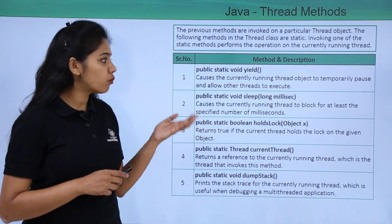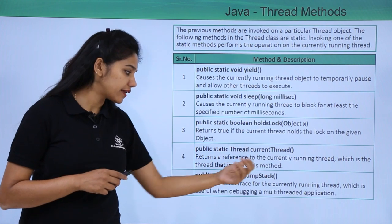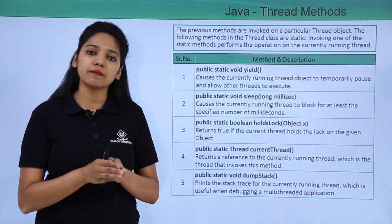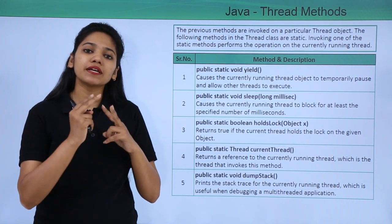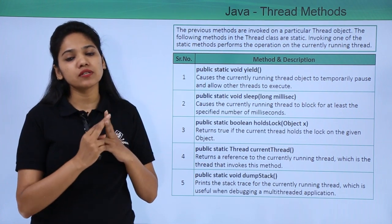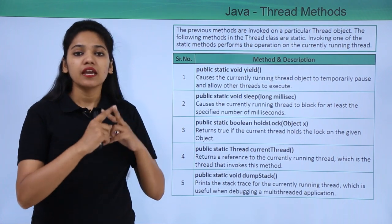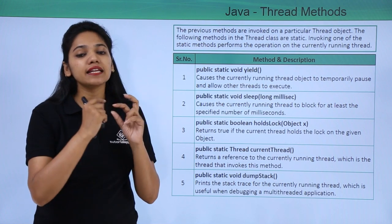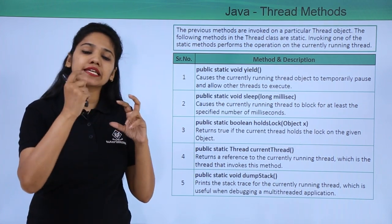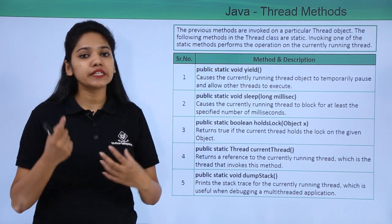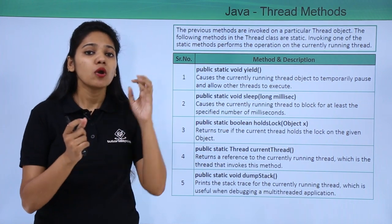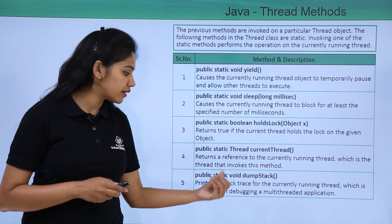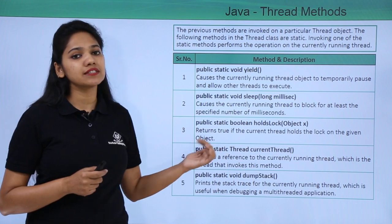There are certain static thread methods as well: yield, sleep, hold, currentThread, and dumpStack. The sleep method specifies how many milliseconds you want your thread to sleep. For example, if you have created two threads and you say you want to make the first thread sleep for 10,000 milliseconds — that is 10 seconds — then that thread will not perform its task for the first 10 seconds. The second thread will keep running for those 10 seconds, and once the 10-second period ends, thread one will start executing. You can also yield, lock a resource, find your current thread, or inspect the stack.